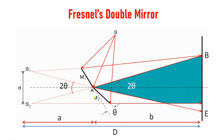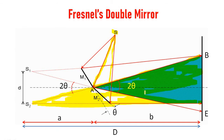Now consider the case of mirror M2. Light is coming from the source S. We can consider this ray — it is coming to a point on M2 and getting reflected in this direction. Light comes from the source, arrives at M2, and is reflected. Extending this, the light appears to come from point S2. So this is called the virtual source S2. We already have the virtual source S1.